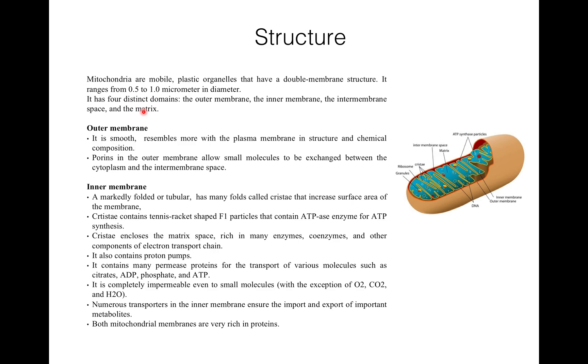They have four distinct domains: outer membrane, inner membrane, intermembrane space, and the matrix. Here you can see the outer membrane, and this yellow one is the inner membrane. The blue one is the mitochondrial matrix. So again, this is the outer membrane, then the yellow one is inner membrane, and between inner and outer there is a space which is known as intermembrane space.